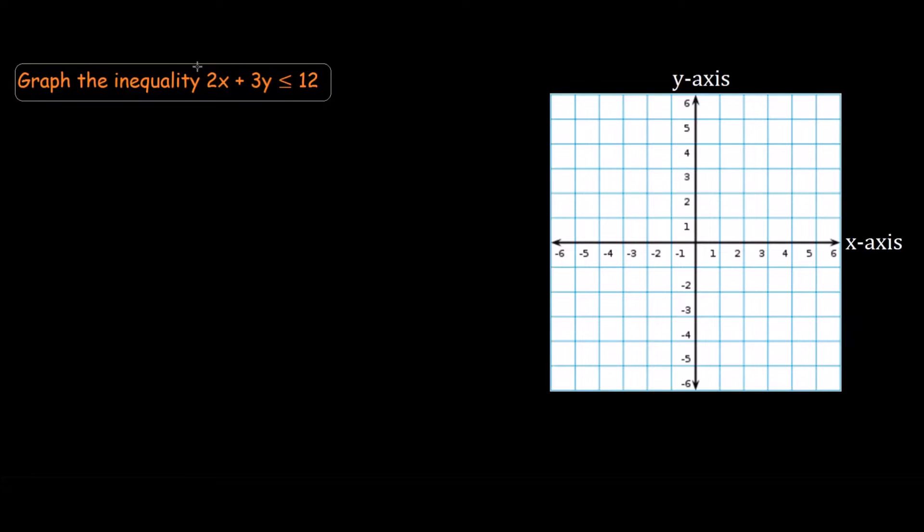We have this inequality 2x plus 3y less than or equal to 12, and our aim is to graph it on this grid. We want to highlight the region where all the coordinates x and y obey this inequality, so it will be a highlighted region when we find our solution.